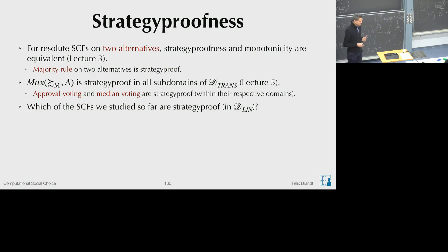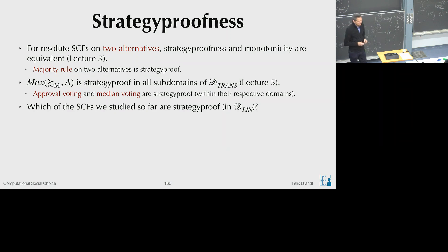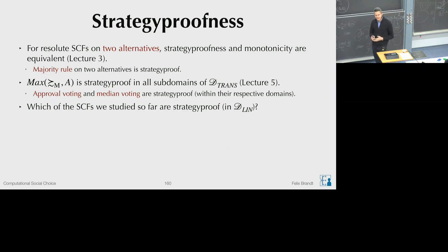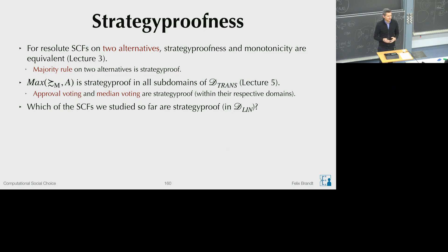The most interesting question now is which of the functions we have studied in the general domain are actually strategy-proof. By concrete functions I mean scoring rules, or majoritarian functions like top cycle, UC, Banks, and the bipartisan set. For scoring rules we saw an example in the first lecture where plurality and Borda's rule can be strategically manipulated. For majoritarian functions like the top cycle or uncovered set which return a large number of alternatives, the question becomes somewhat ill-defined.